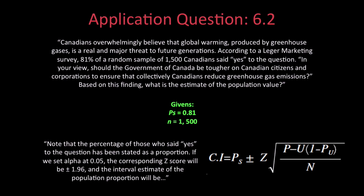Now flip to page 159 and look at application question 6.2. Canadians overwhelmingly believe that global warming produced by greenhouse gases is a real and major threat to future generations. According to a Leisure marketing survey, 81% of a random sample of 1,500 Canadians said yes to the question: should the government of Canada be tougher on Canadian citizens and corporations to ensure that collectively Canadians reduce greenhouse gas emissions? Based on this finding, what is the estimate of the population value? If we set alpha at 0.05, the corresponding z-score will be plus or minus 1.96.